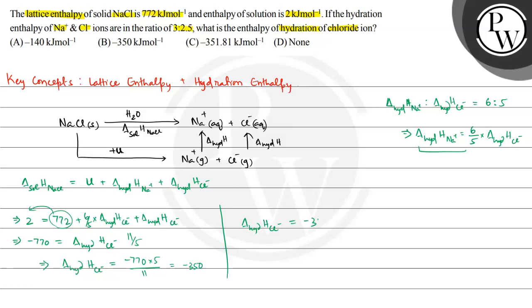So the enthalpy of hydration of Cl- is equal to -350 kilojoule per mol. I hope you understood the concept well. Best of luck!